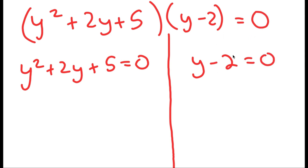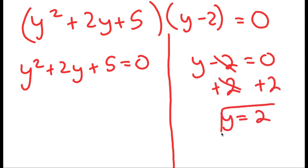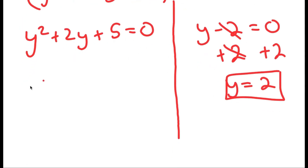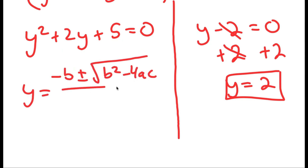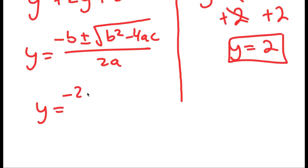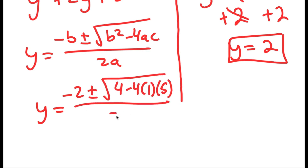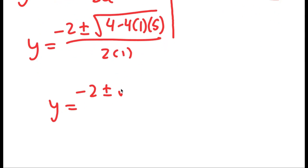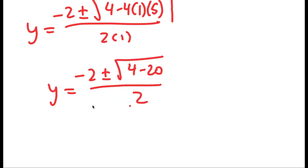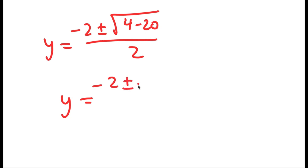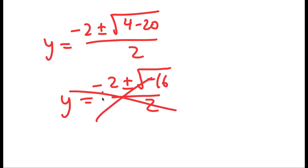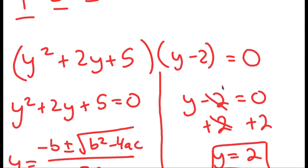For y minus 2 equals 0, adding 2 on both sides gives y equals 2. For y squared plus 2y plus 5 equals 0, using the quadratic formula I get y equals negative 2 plus or minus the square root of 4 minus 20, all over 2, which gives the square root of negative 16. Because we have a negative under the square root, those solutions are complex and we can only use y equals 2.